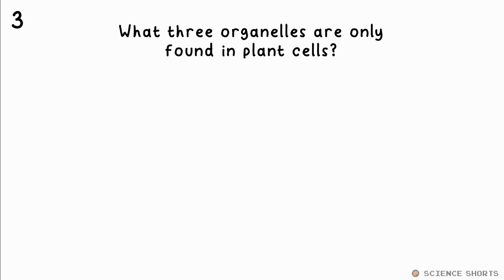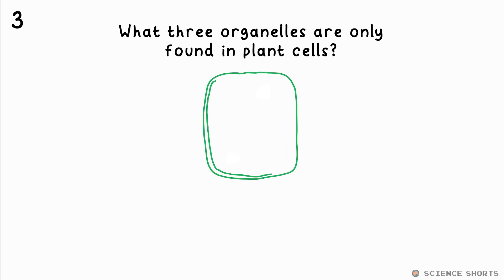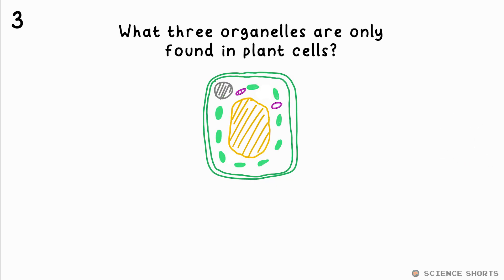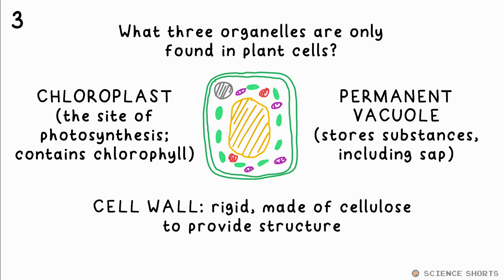Question 3. What three subcellular structures or organelles are only found in plant cells? They have chloroplasts — that's where photosynthesis takes place. They have a permanent vacuole, where water and sap and other things are stored, and a cell wall, which is rigid due to it being made from cellulose.